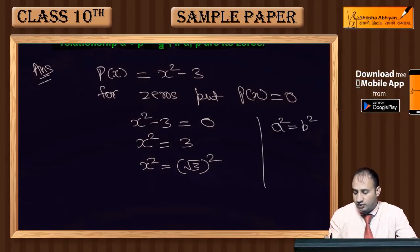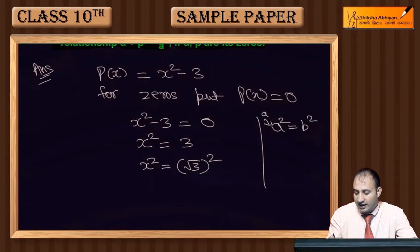...and here a is a variable and b is a constant, then a's value will be plus or minus b.